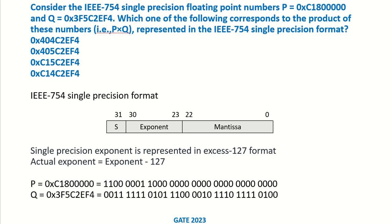Consider the IEEE 754 single precision floating point numbers P and Q. Which one of the following corresponds to the product P into Q represented in the IEEE 754 single precision format? We are given four options.